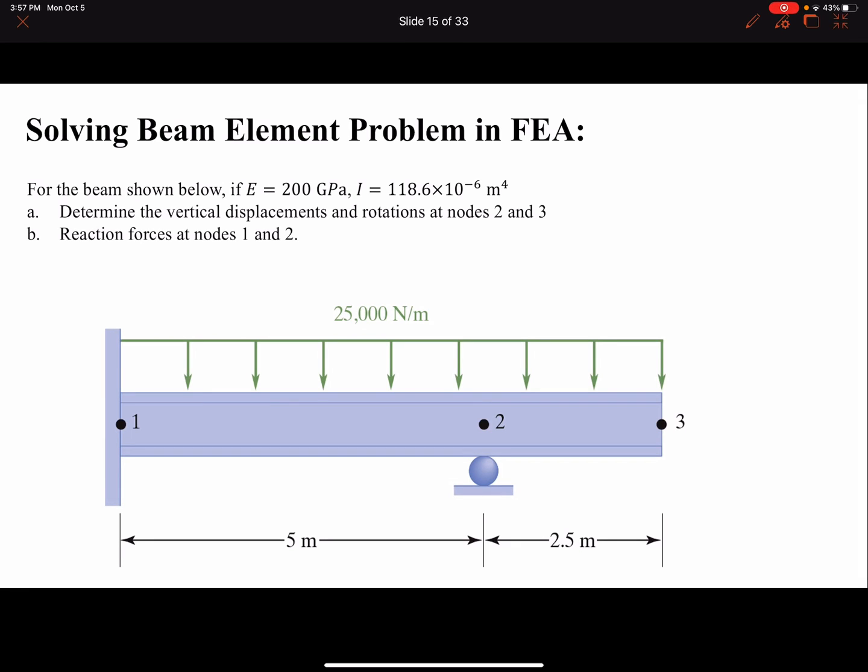Hello everyone. In this video I'm going to solve an example of beam element in FEA. For this beam we have the mechanical properties: elastic modulus 200 gigapascals, we have the second moment of area, and we have the length for each element.